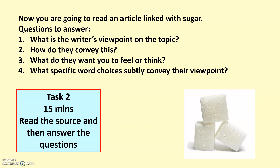What I want you to do now is have a go at these questions. Like we've been doing with Paper 2, where you're given two sources — today it's just the one source. Read the article on Show My Homework, which is linked to sugar, and write down answers to these questions. You've got 15 minutes. Question 1: what is the writer's viewpoint on the topic? Question 2: how do they convey this — 'how' is a trigger for methods and language choices, so give me a couple of quotes. Question 3: what do they want you to feel, think, or do after reading? And Question 4: what specific word choices subtly convey their viewpoint? The viewpoint is there but doesn't shout at you — that's why I've used the word 'subtly.' The article is the Jamie Oliver one. Stop this video, go and read it, then answer those questions. Pause now.